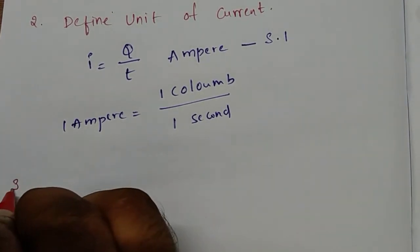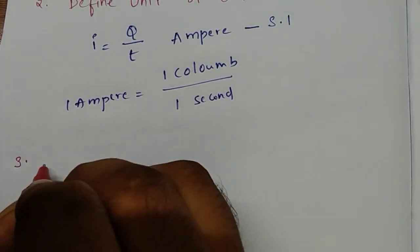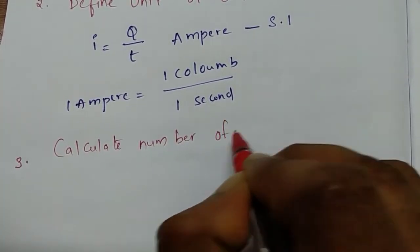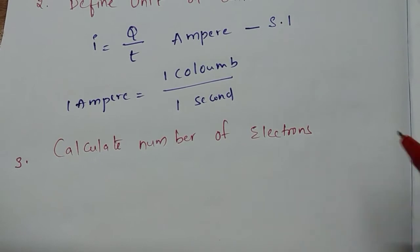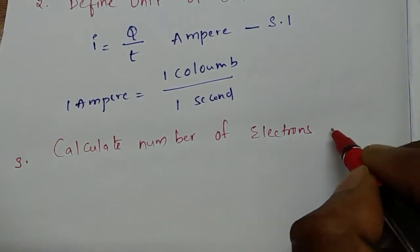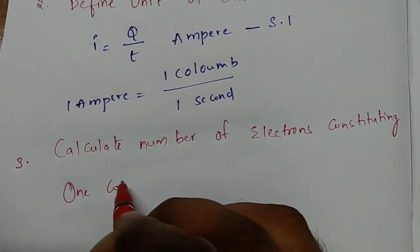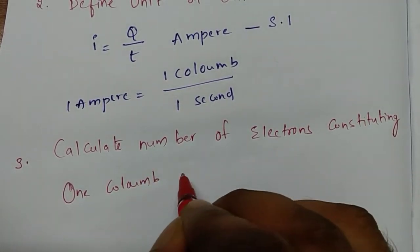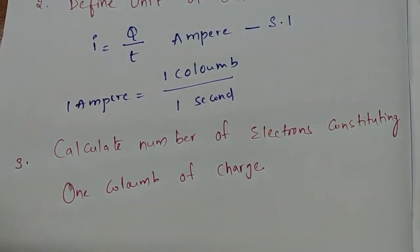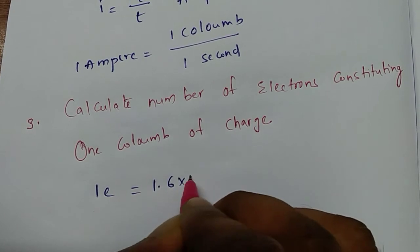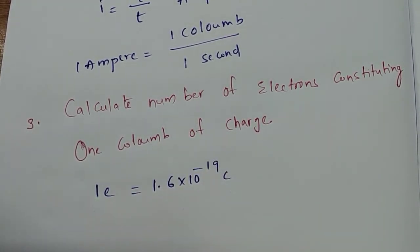Third question: calculate the number of electrons constituting 1 coulomb of charge. In 1 coulomb of charge, how many electrons will be there? First of all, 1 electron is equal to 1.6 × 10⁻¹⁹ coulombs. Then how many electrons will give 1 coulomb of charge? That is the question being asked.